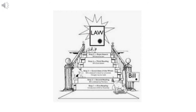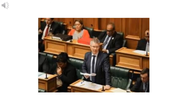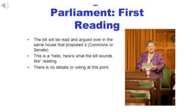The lawmaking process in India. Under the first reading, the main points include: government constituent power of parliament, legislative powers, nature of people's mandate, and the difference between a bill and an act. Next — how a bill becomes an act in parliament — money bill. In the first reading, the bill will be read and argued over in the same house that proposed it. There is no debate or voting at this point.